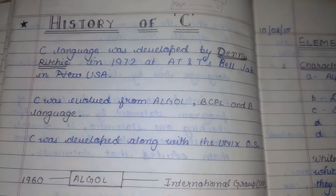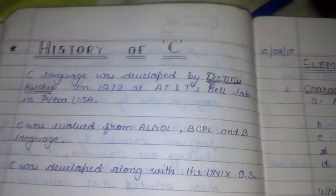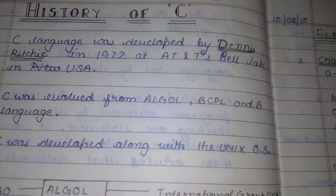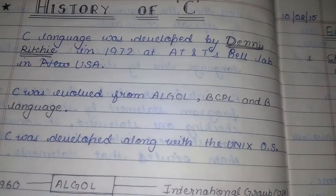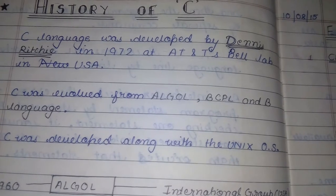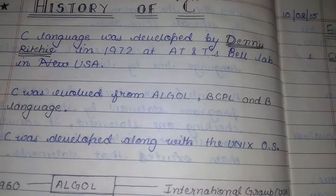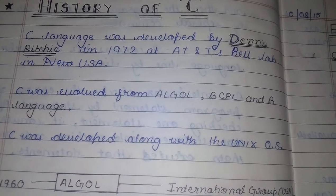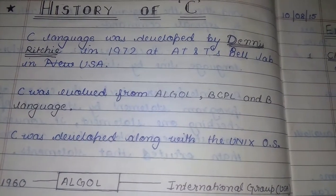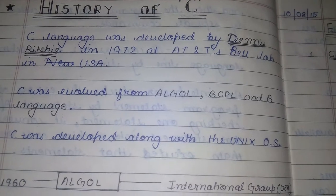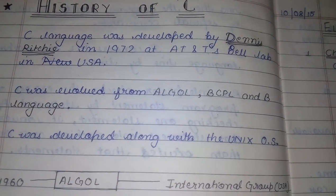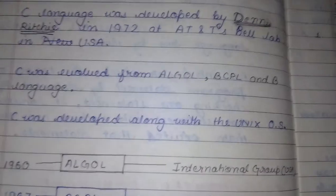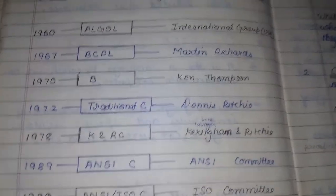Before learning C, we'll go through the history of C. C language was developed by Dennis Ritchie in 1972 at AT&T Bell Labs in USA. It evolved from different languages: ALGOL, BCPL, B language, etc.